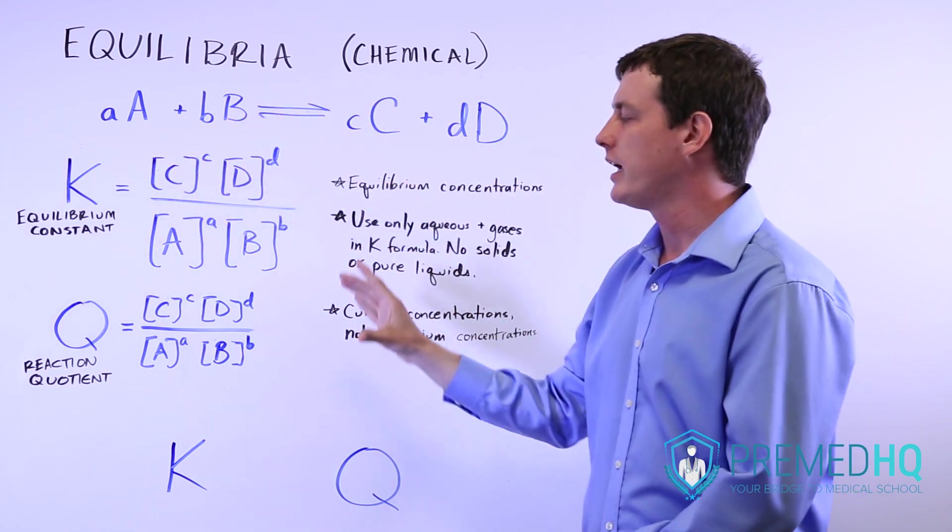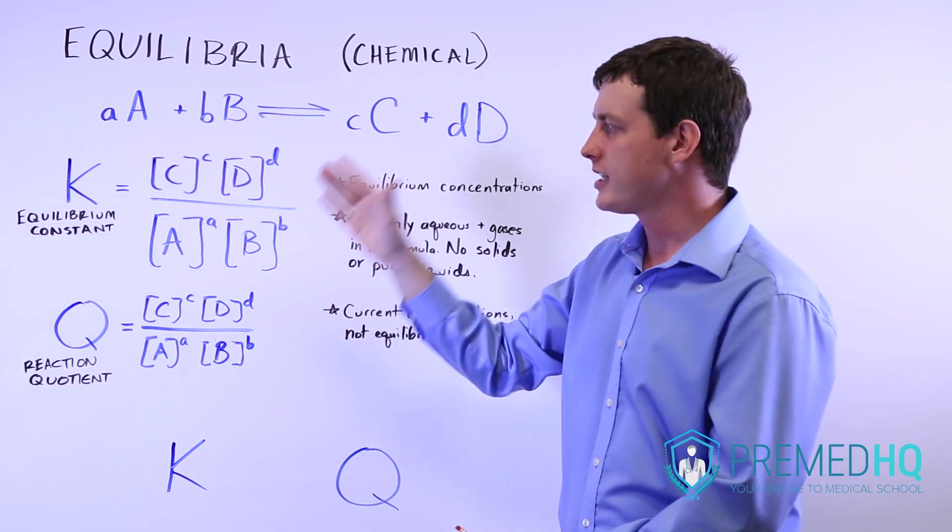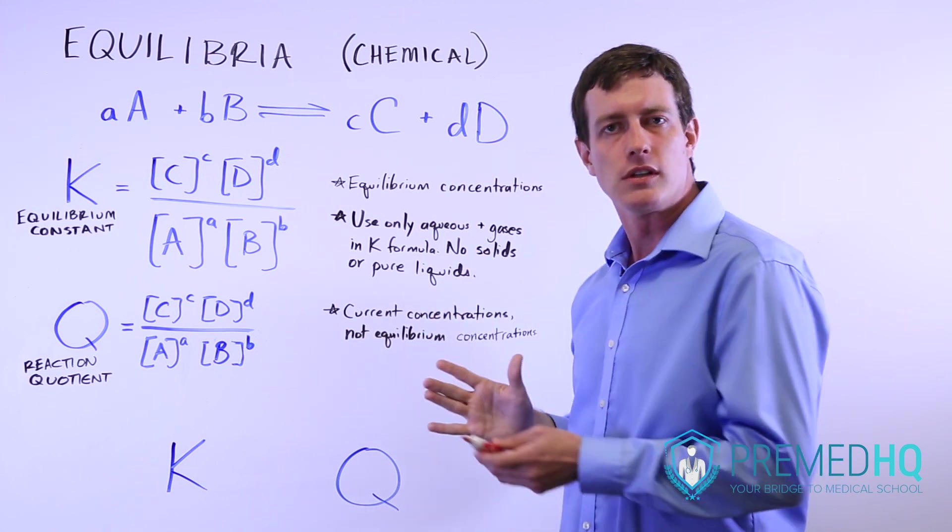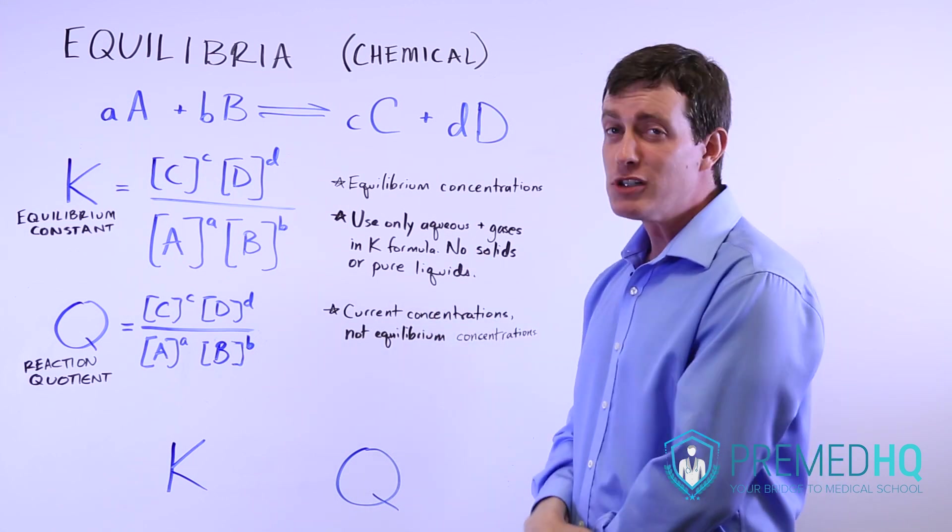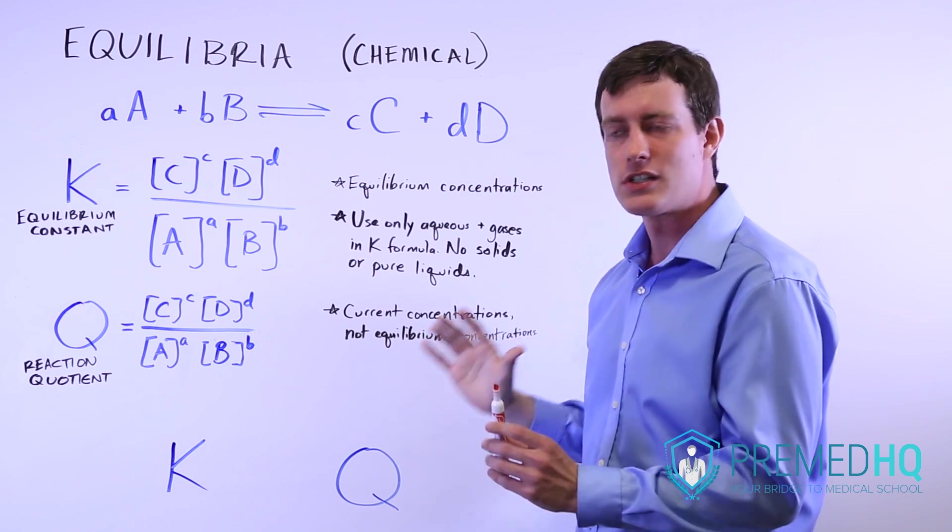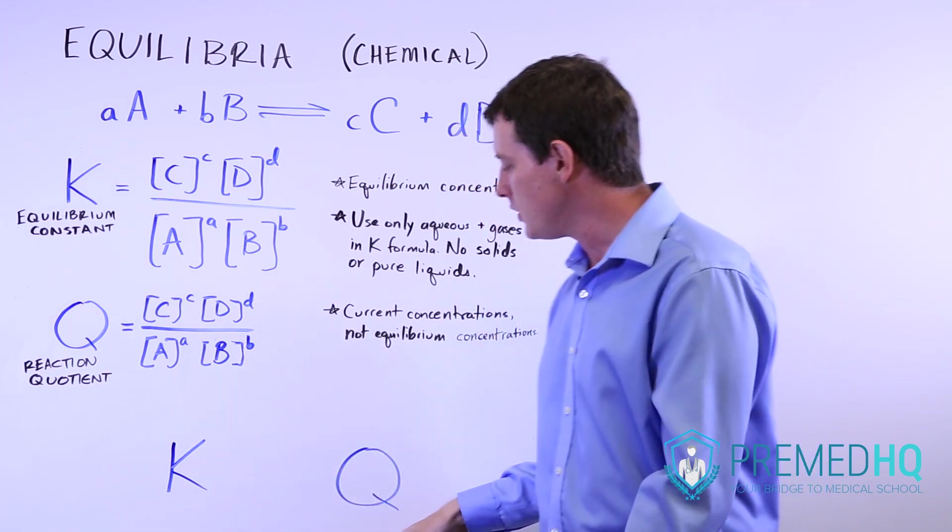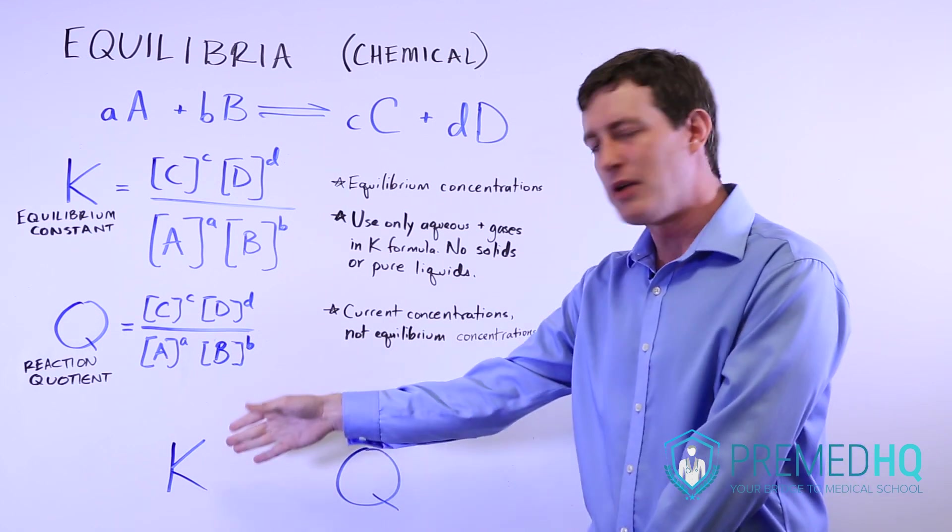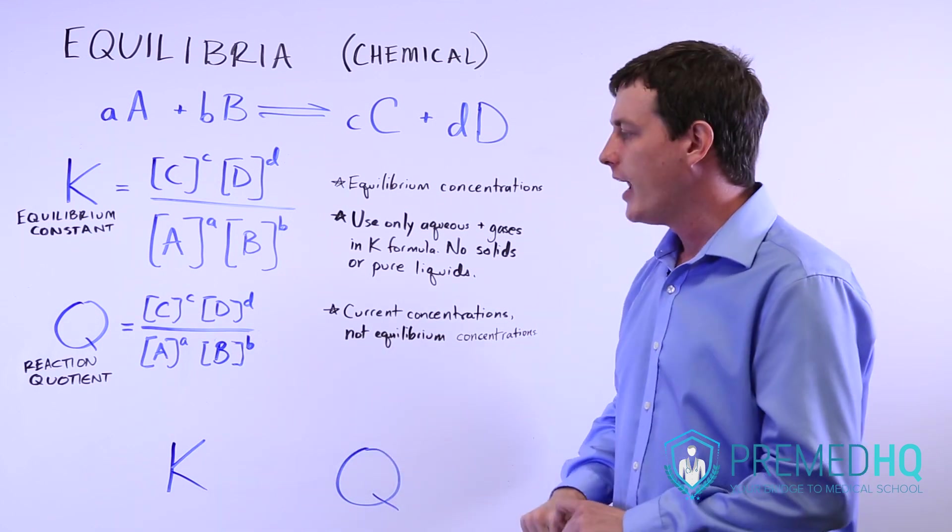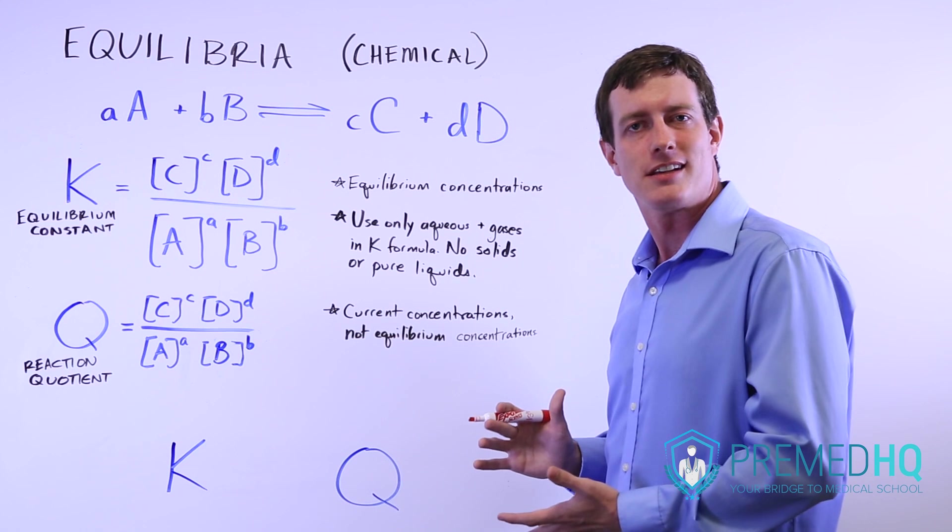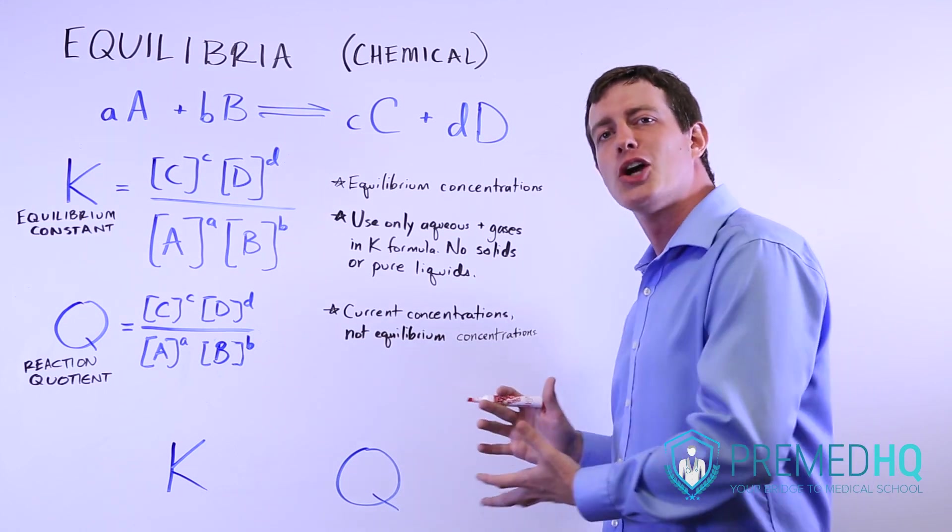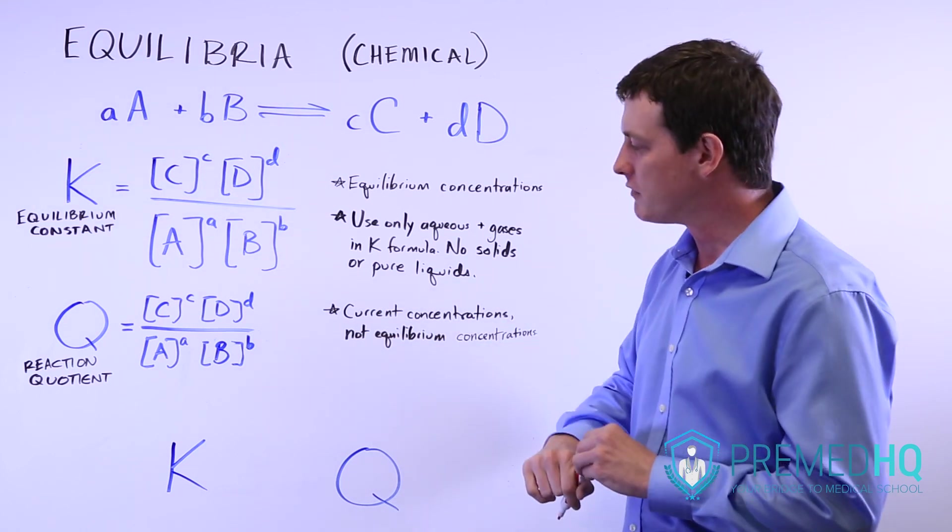So really understand why Q greater than K means something or why Q less than K means something. But a really simple hack you can use just to figure this out in a pinch is if you put K and Q next to each other, this is alphabetical, K comes before Q, and then draw a greater than or less than sign, that becomes an arrowhead that tells you which direction the reaction will move.